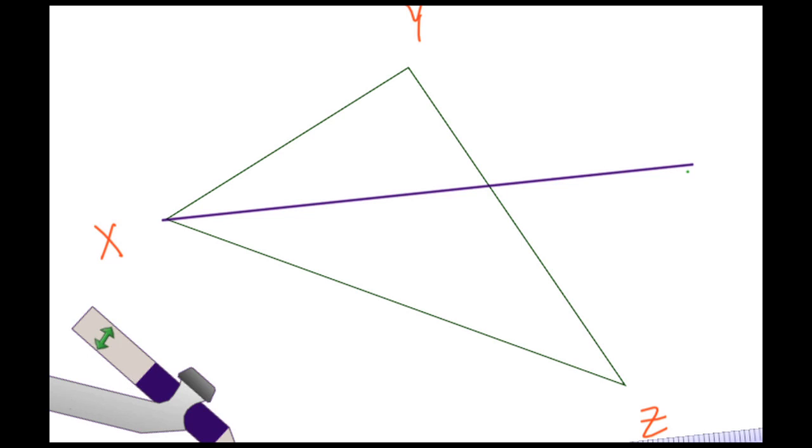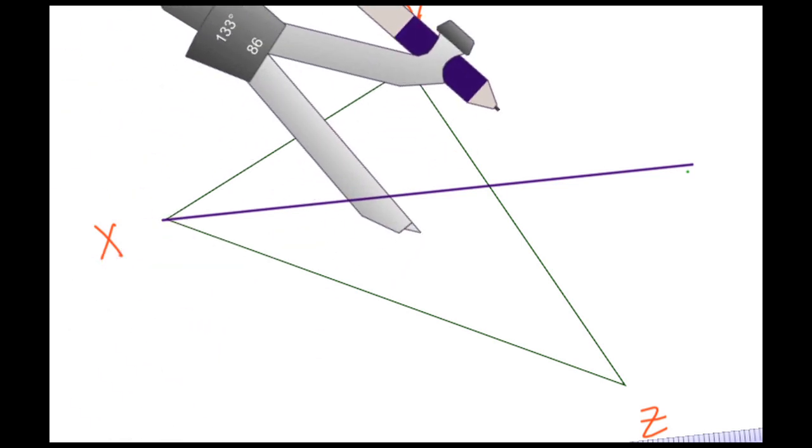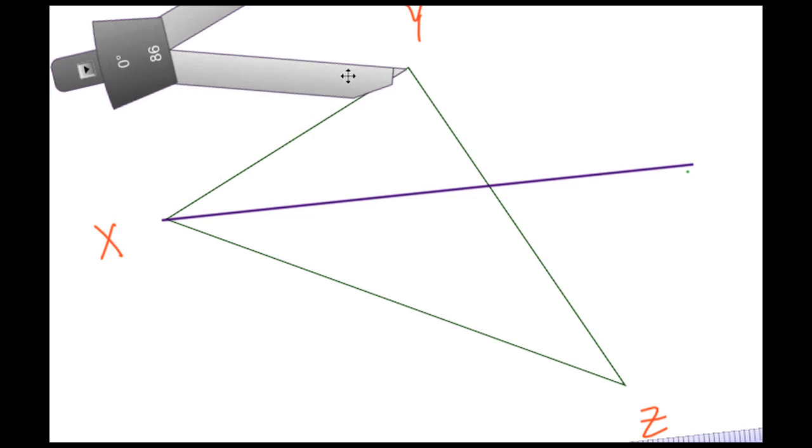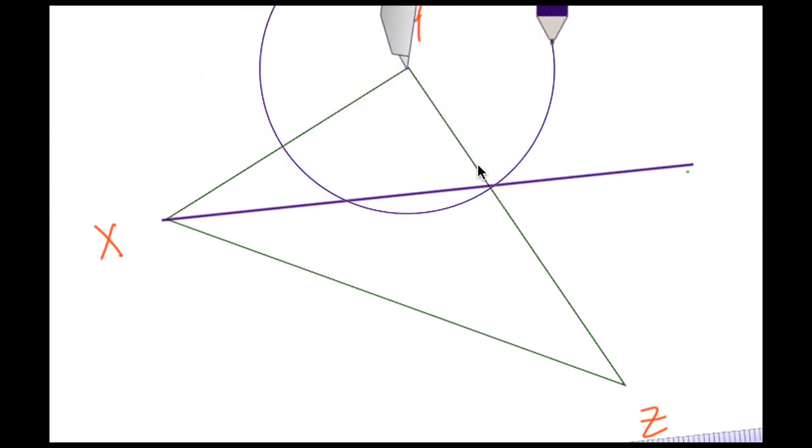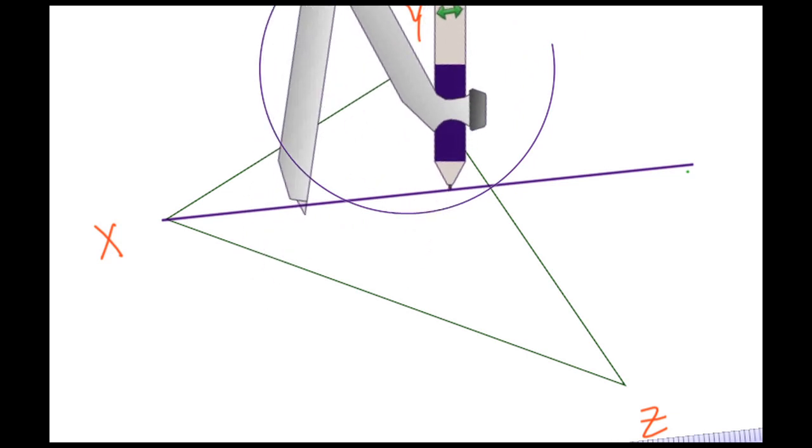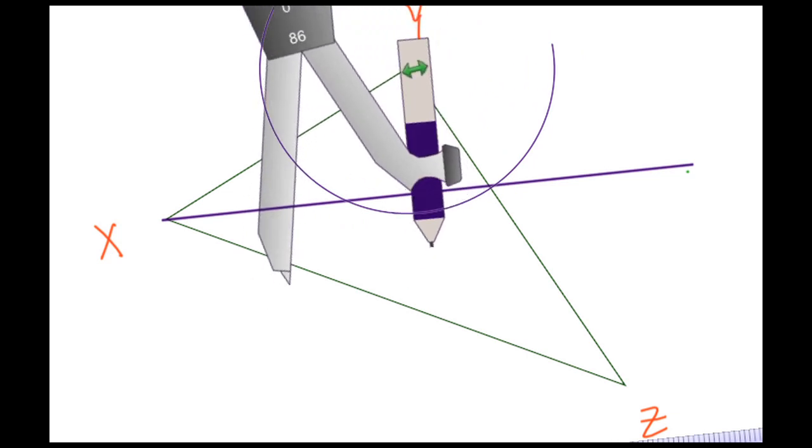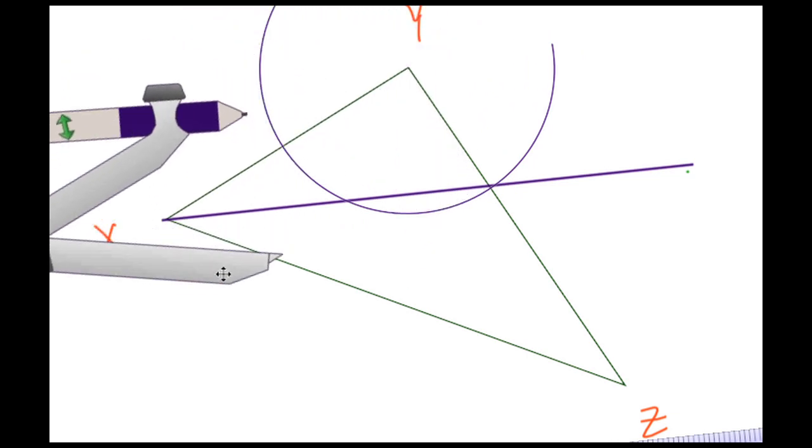Again, placing the pointy end on Y, and then I want to draw another arc. Again, we see this arc intersecting at two places. Without changing the radius, let me go ahead and place the pointy end on one of those locations that intersect the side and draw another arc.